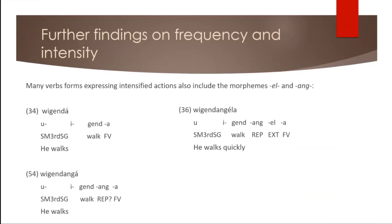And I also had a look at two further elements, two further morphemes, el and ang. So let's start by having a look at the verb for to walk. Weekenda would be he walks. And if we say weekendanga, but still he walks. But if we add an L to that, so weekendangela, that would be he walks quickly. So let's compare that verb with another one, which is hitting.